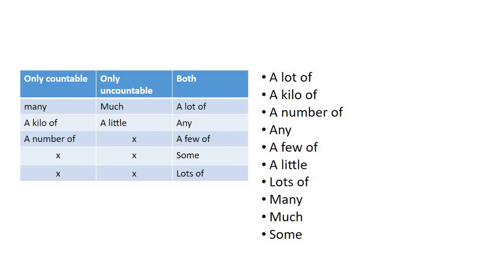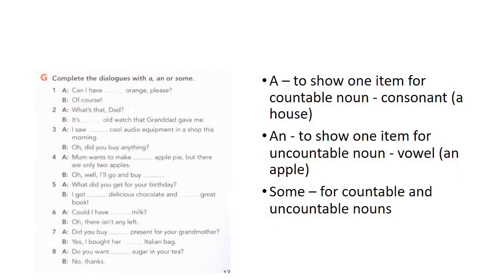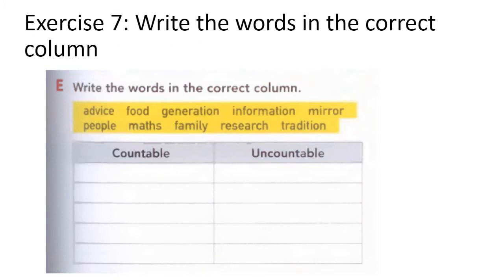The answer for exercise six has been provided — go through it and write it down. Exercise seven: write the words in the correct column — countable or uncountable. Advice — nasihat — is uncountable. Food is uncountable because you can't count it like furniture. Generation — generasi, first generation, second generation — you can count it, so countable. Information is uncountable.